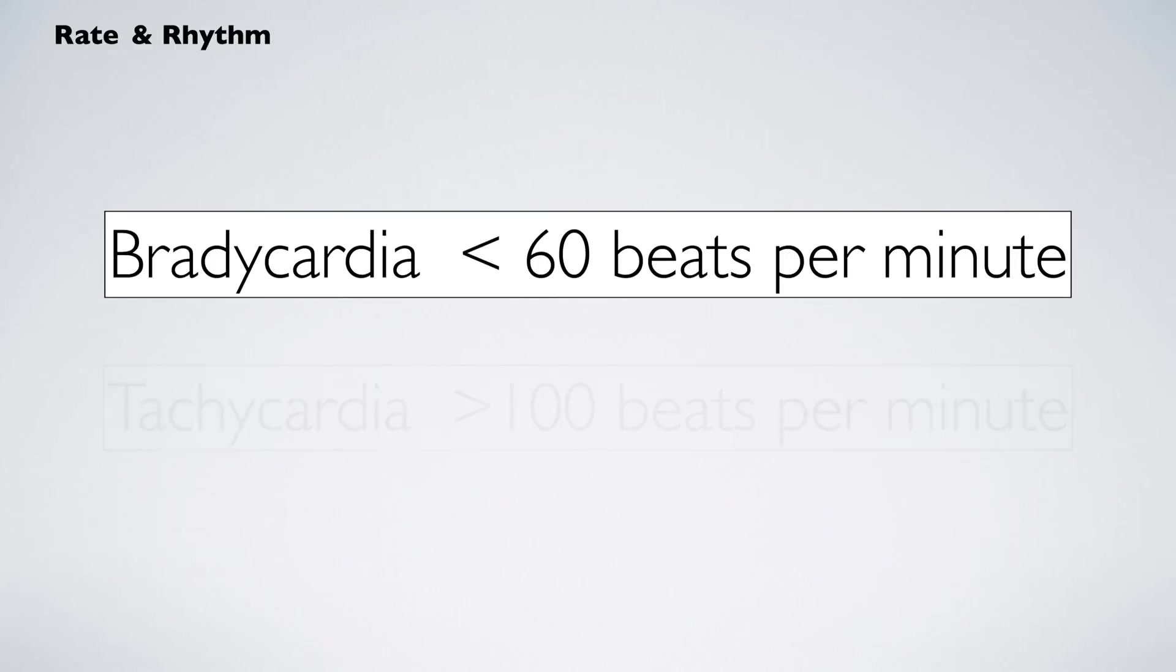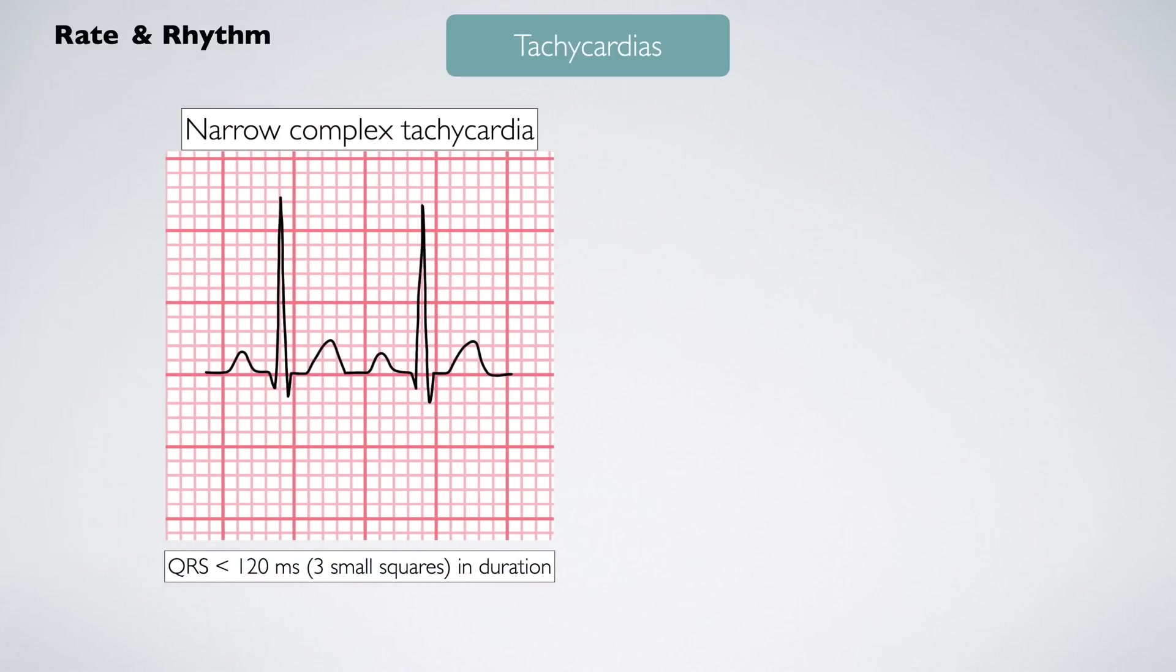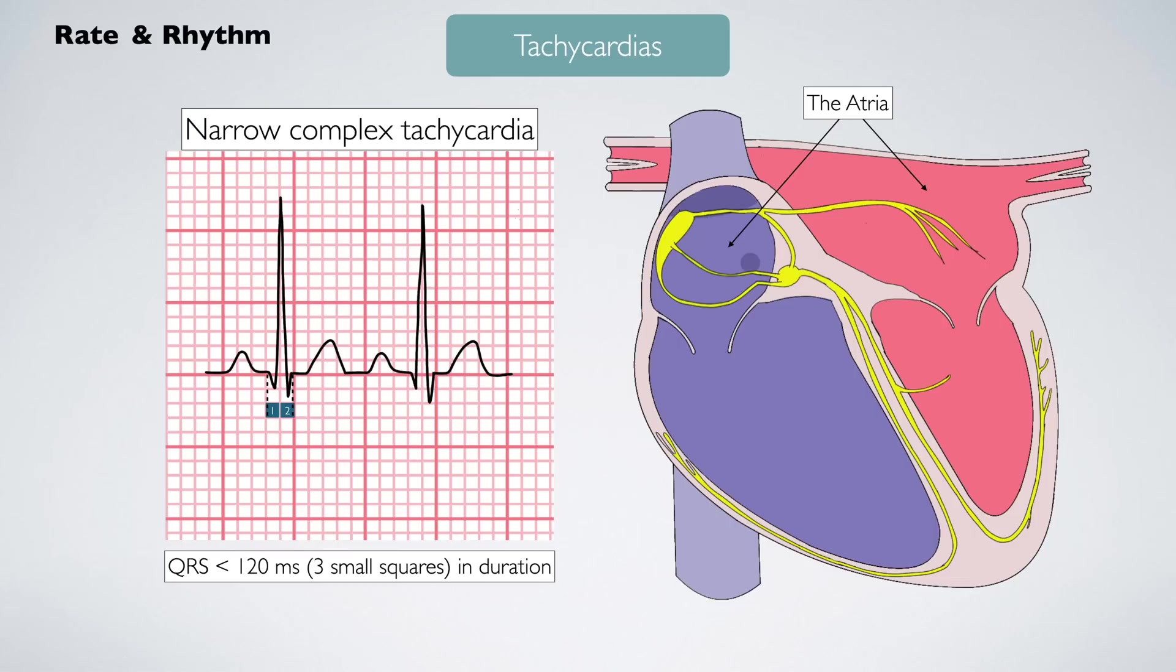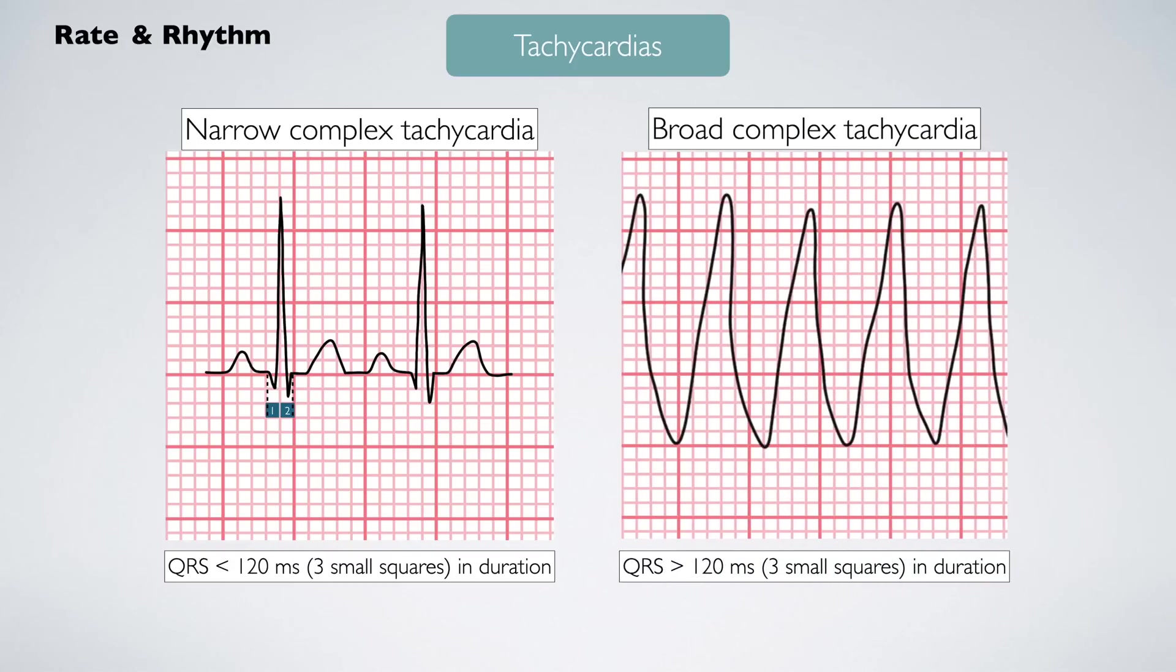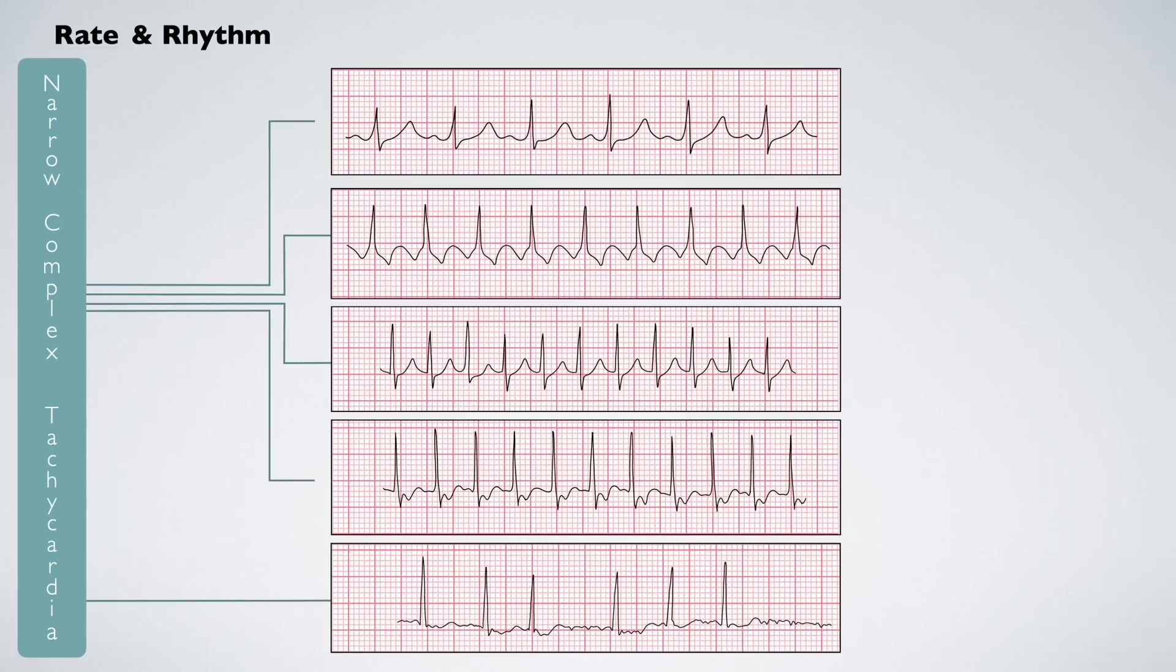Let's take a look at the tachycardias. Tachycardias are classified by the shape and duration of the QRS complex. Narrow complex tachycardias have a QRS complex less than 3 small squares in duration. These typically originate from the atria. Broad complex tachycardias originate from the ventricles with a longer duration of greater than 3 small squares. Let's look at the narrow complex tachycardias. All have a rate greater than 100 beats per minute with narrow QRS complexes.